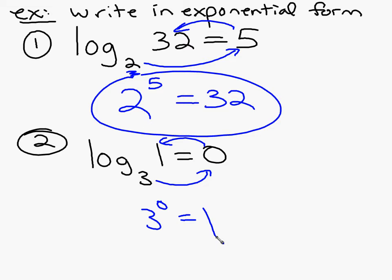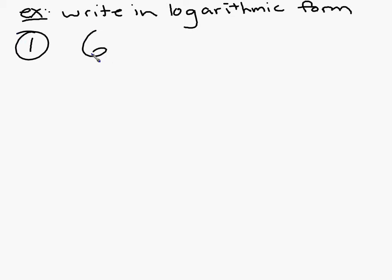They'll also ask you to go the other direction. They will also say write in log form or logarithmic form. So they're going to give it to you in exponential form and they want you to write it in log form like this. They're going to give it to you as 6 to the 3rd equals 216, something like that. And then they're going to say, okay, write that in logarithmic form.